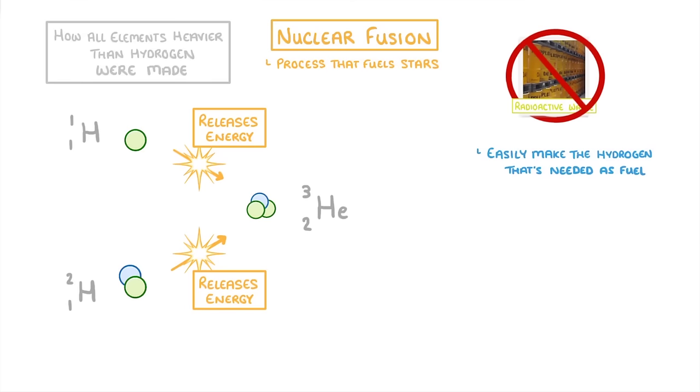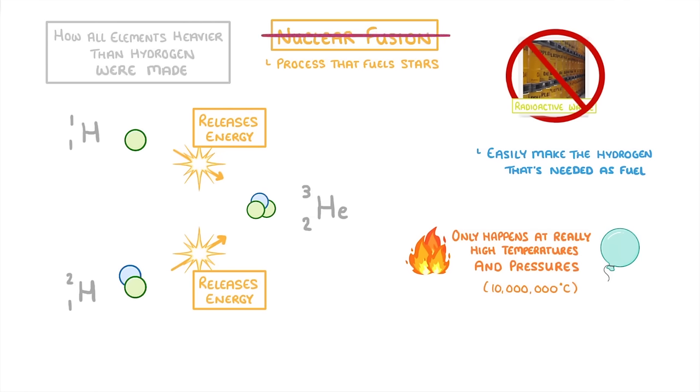The issue though is that fusion only happens at really high temperatures and pressures, as in 10 million degrees celsius. Because of this we can't currently do nuclear fusion here on earth, but there is a lot of experimental research going into discovering how we could do it one day.